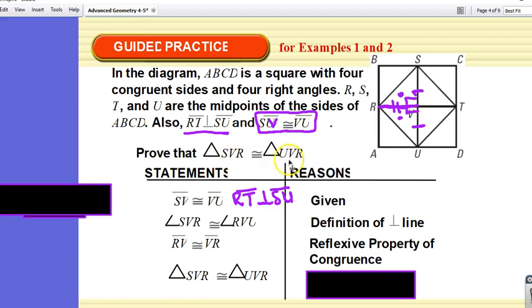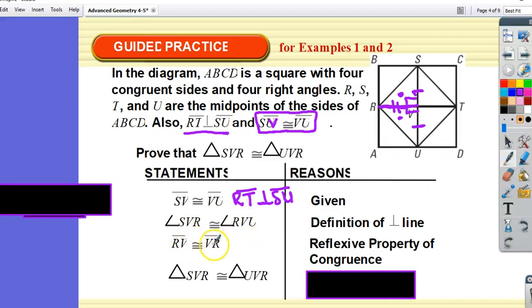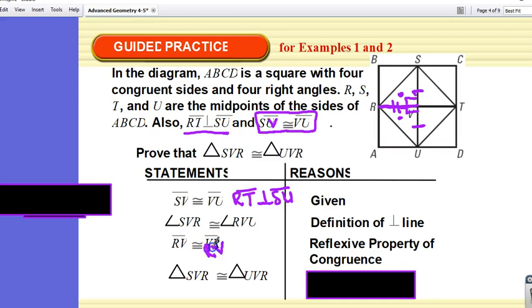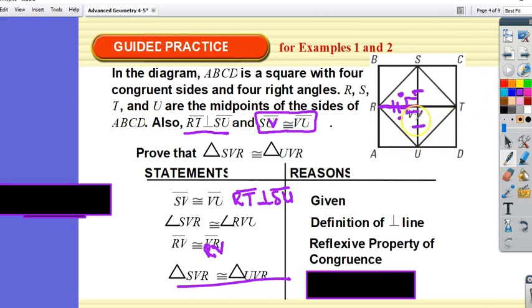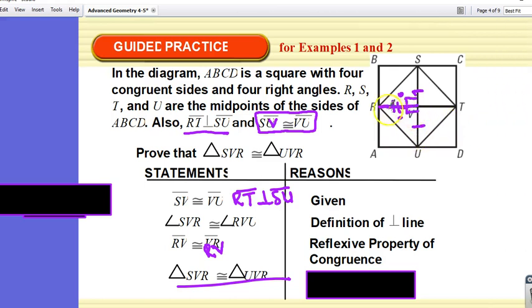They're reversing RV and VR. They shouldn't have. Look at the proof statement. VR, VR. They're written in the same order. They should be written in the same order here. Your textbook publishers are not the greatest. So, be careful with that. They should be written in corresponding positions. So, now that we know that they are congruent, why are they congruent? Because of side, angle, side.